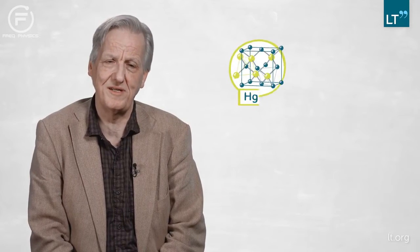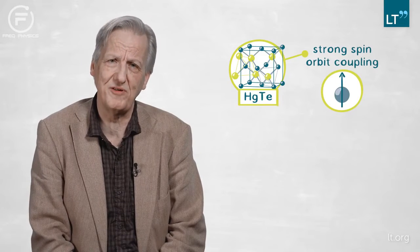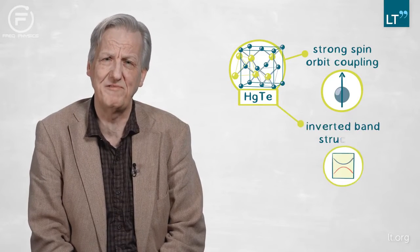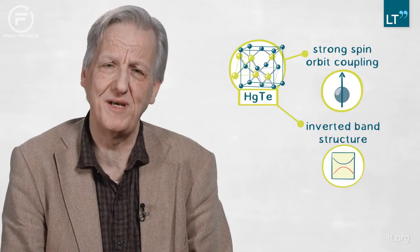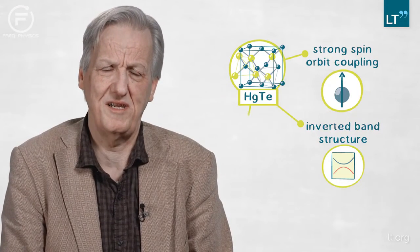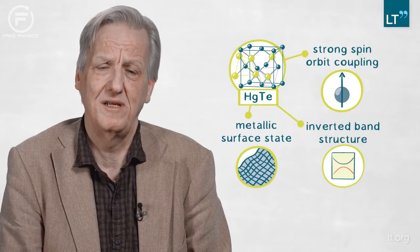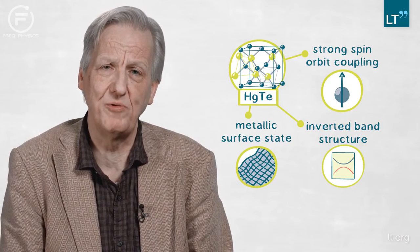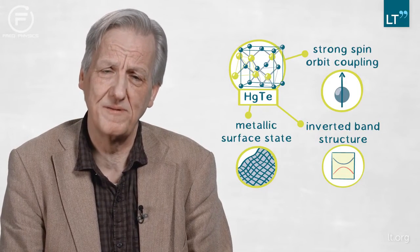I knew at that time that our material — mercury telluride — not only had a strong spin-orbit coupling, but also had a weird inverted band structure. Because of this inverted band structure, it had a surface state occurring even when the bulk was insulating — a metallic surface state.